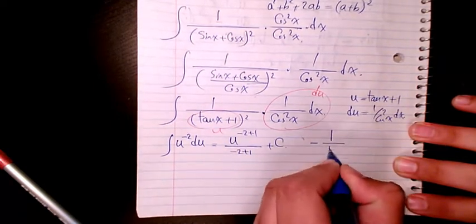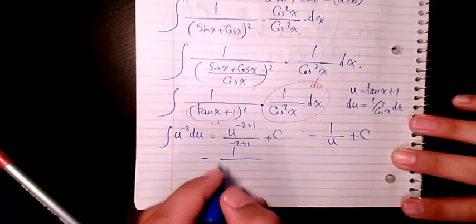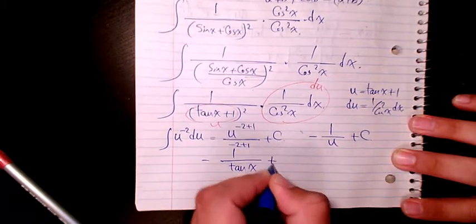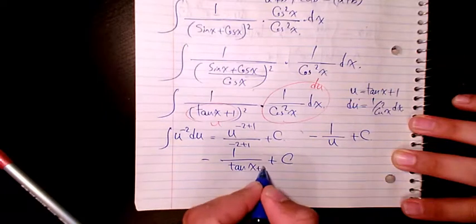Or negative 1 over tan x plus C. Actually u is tan x plus 1, so tan x plus 1 plus C. So that's the final answer.